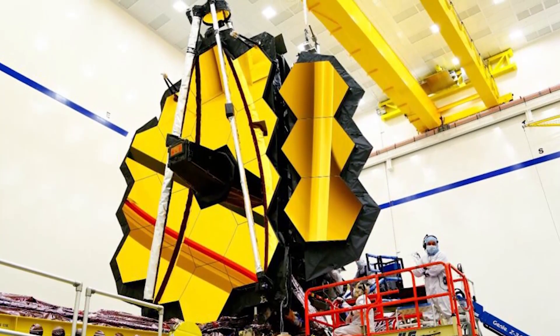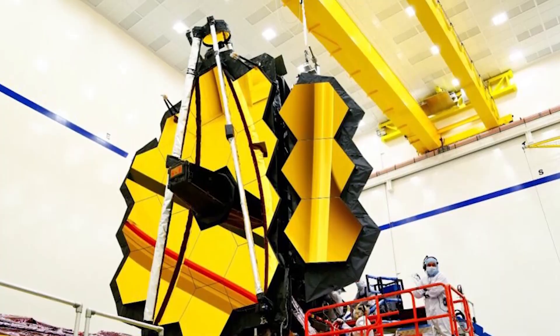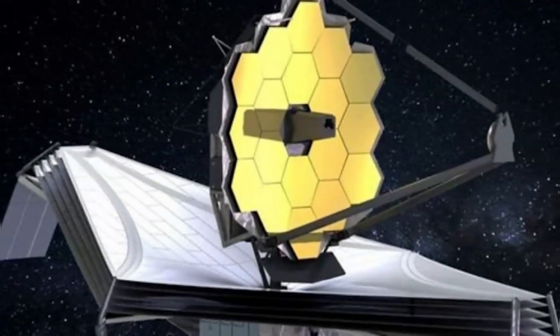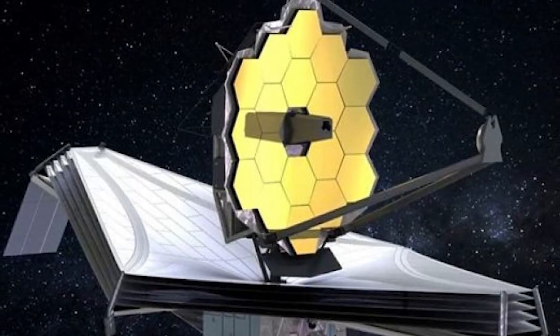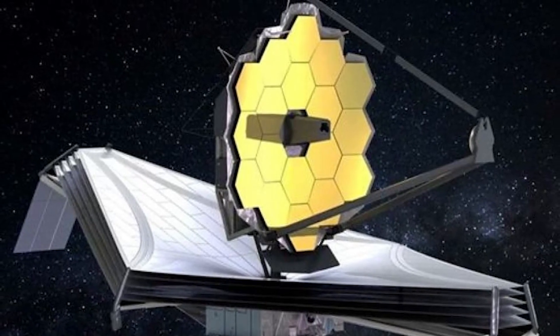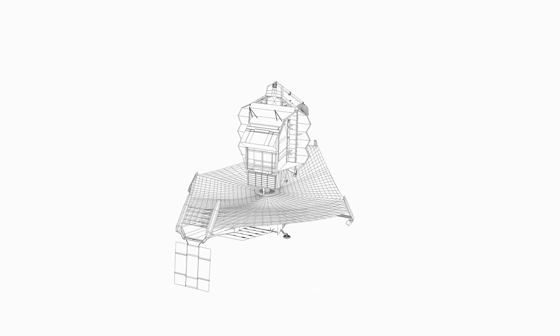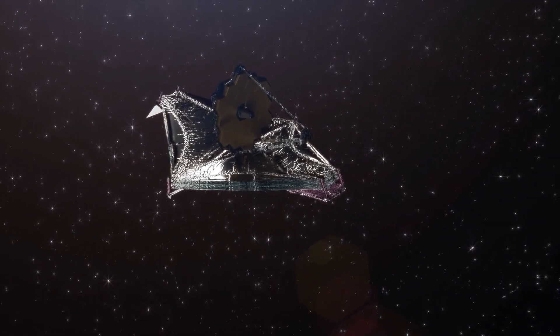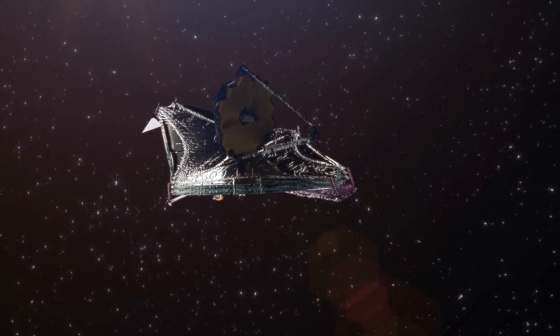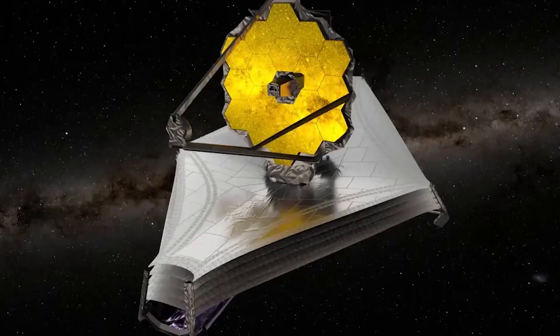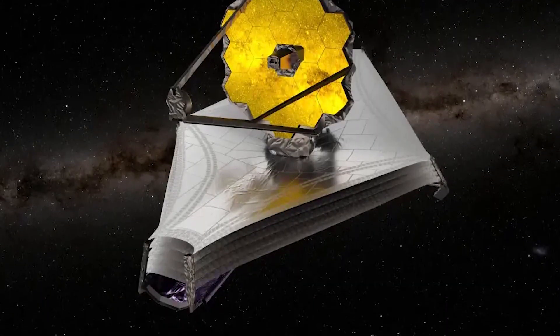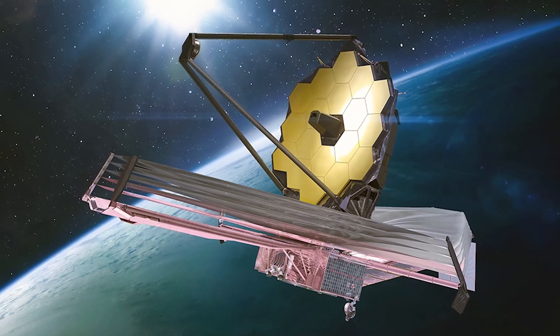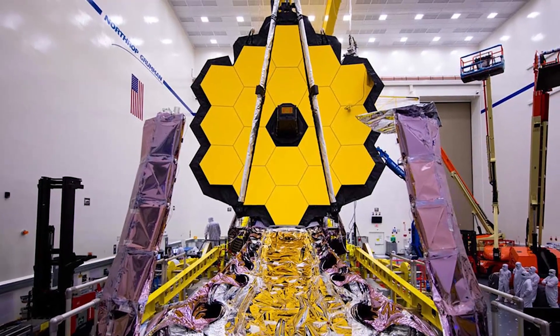The JWST boasts impressive features, including a large mirror and distinctive segments, setting it apart as a remarkable instrument in the field of astronomy. Its extended infrared sensors have proven invaluable in exploring the farthest reaches of the cosmos with unparalleled precision. Yet, the JWST's significance extends beyond mirror image capture. Its adaptability and versatility have added layers of intrigue. Over the course of two years, the JWST has surpassed expectations by accomplishing a multitude of objectives, from uncovering hidden galaxies and scrutinizing distant stars and quasars to observing planets within our own solar system.